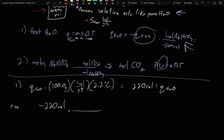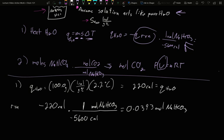There is a ratio of energy of reaction to moles of starting material in the balanced reaction. At negative 5.6 kcal — a kilocalorie is 1,000 calories — so negative 5,600 calories per one mole. For every mole of sodium bicarbonate that reacted, it should have released 5,600 calories. We only released 220, so there was a lesser number of moles that reacted: 220 divided by 5,600 gives 0.0393 moles of NaHCO3.